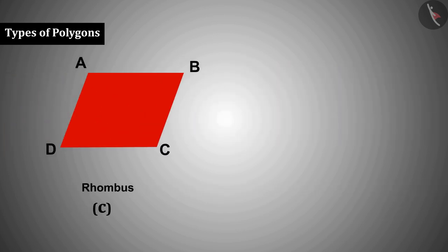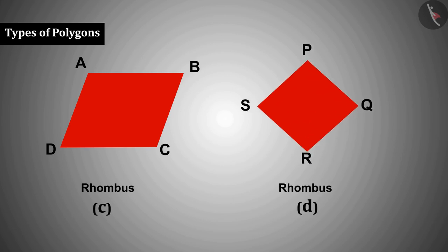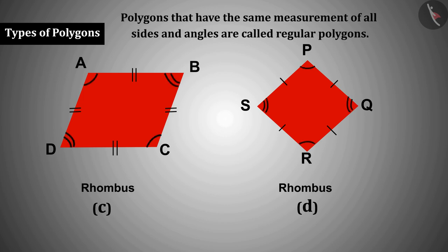Both polygon C and polygon D are rhombus. Sometimes they make this mistake because of the equal sides of the rhombus. They forget that all the angles of a rhombus are not equal, which is necessary for a polygon to be regular.